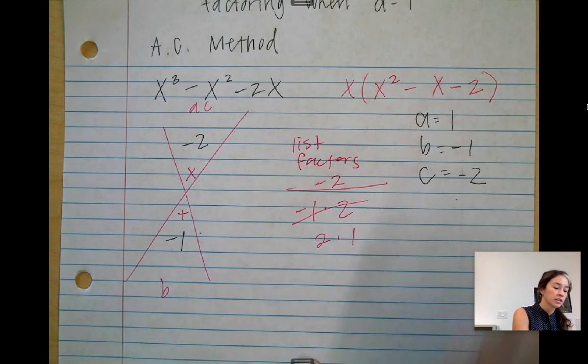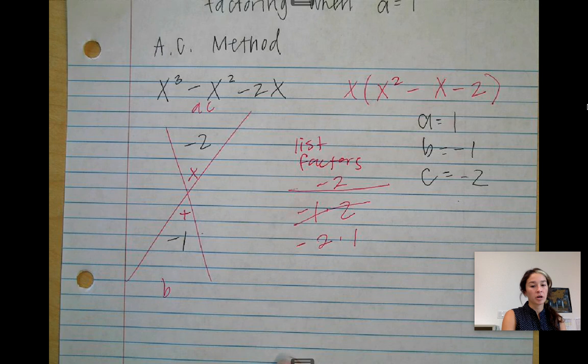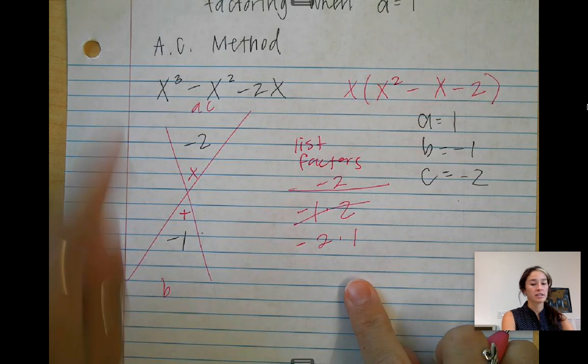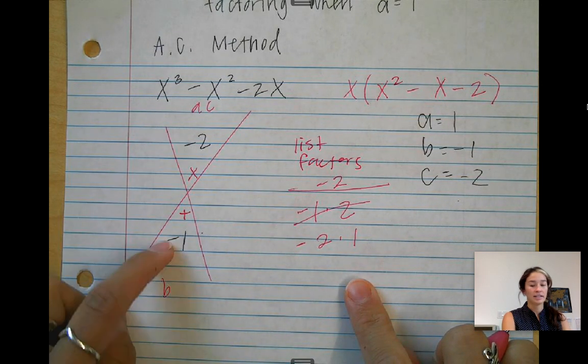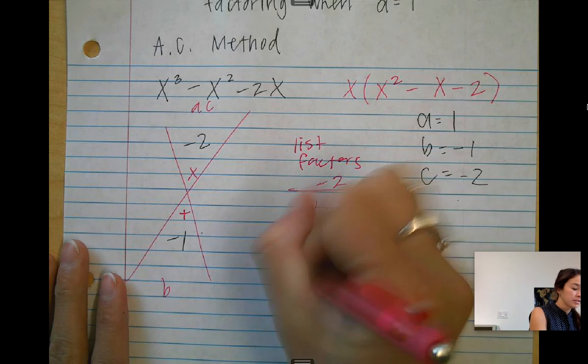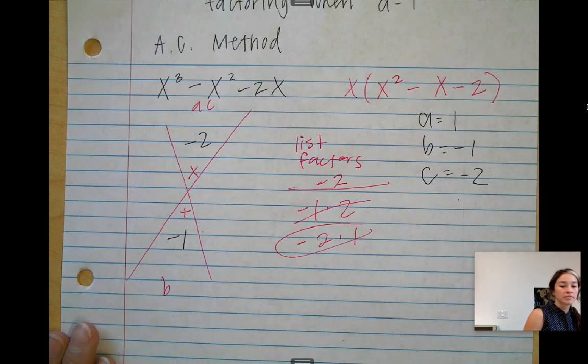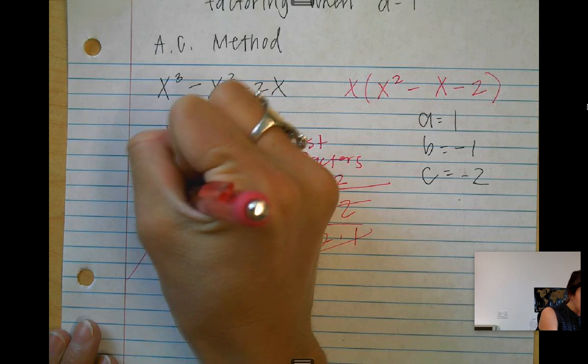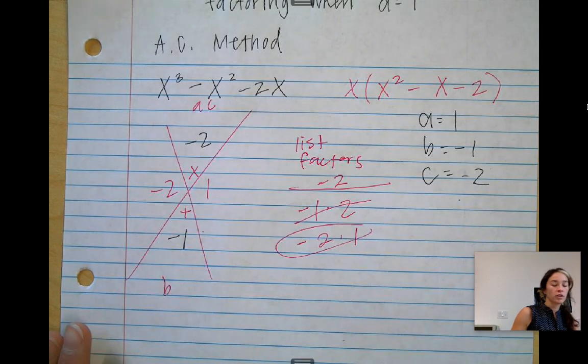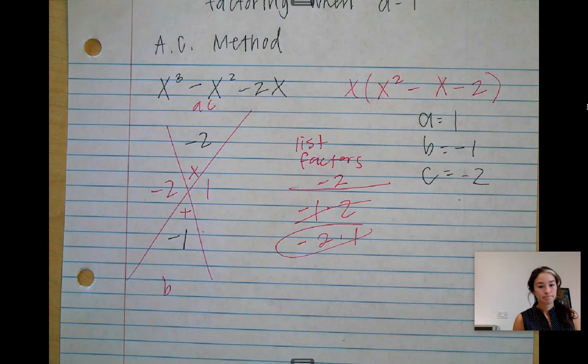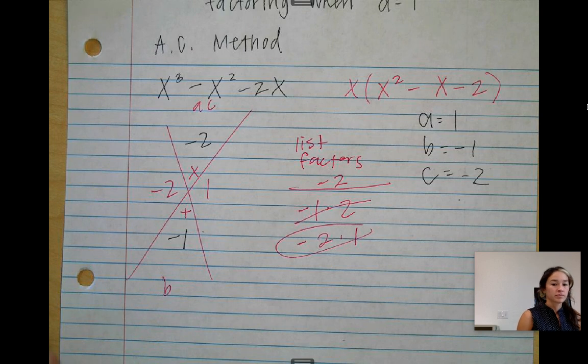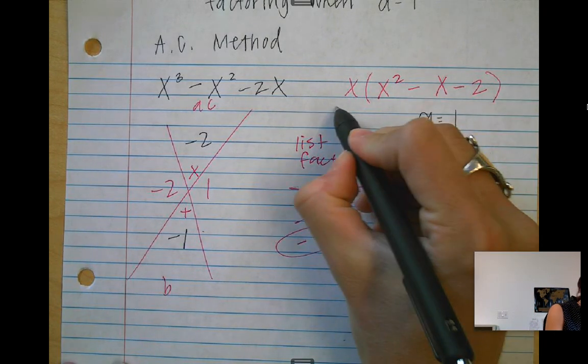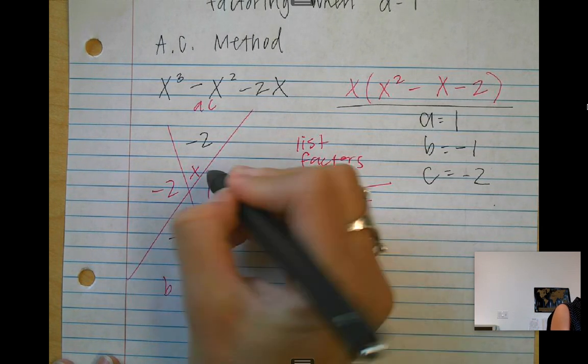So this one doesn't work. But now say we have negative 2 and positive 1, multiplies to negative 2, adds to negative 1. So this is what I'm going to write on the sides of my x. So negative 2, positive 1.